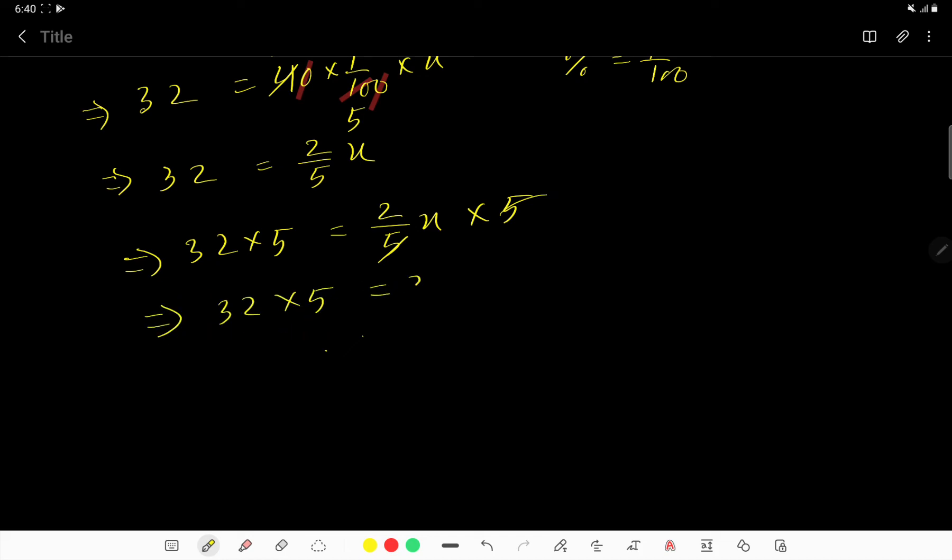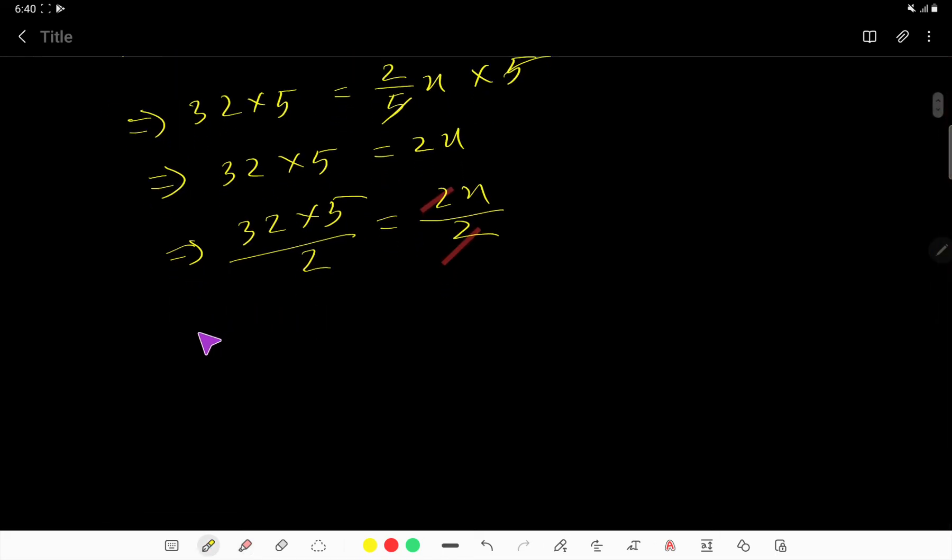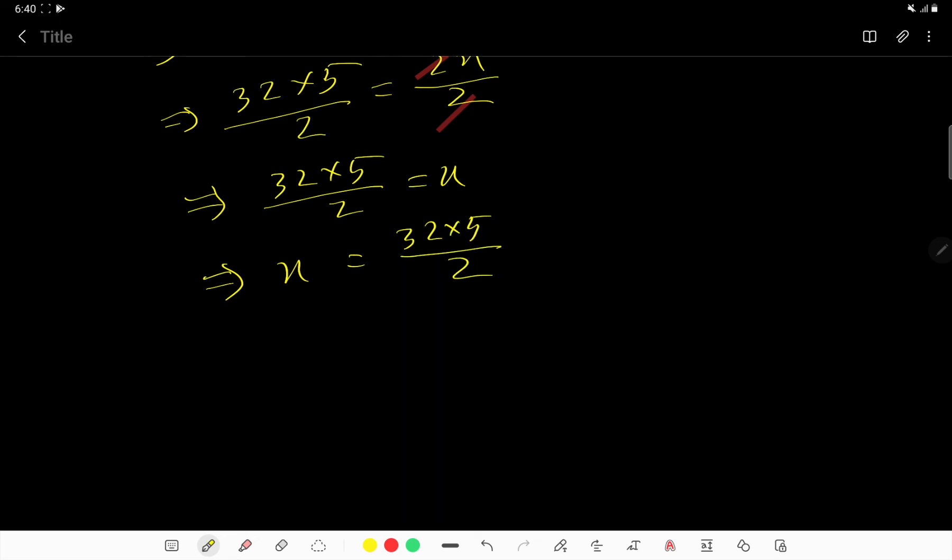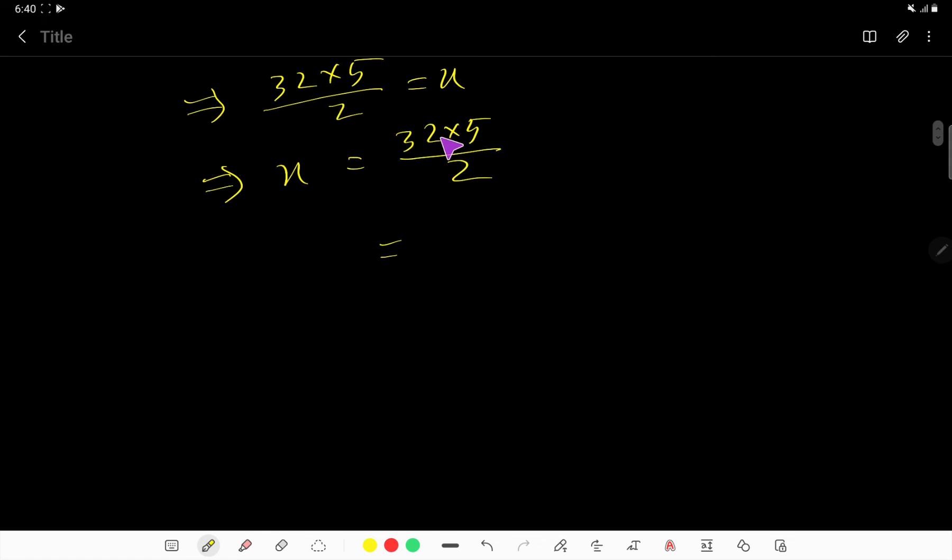Now we can divide both sides by 2, so the 2s cancel each other. We are getting 32 times 5 divided by 2, which equals x.